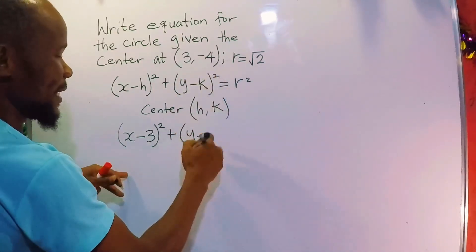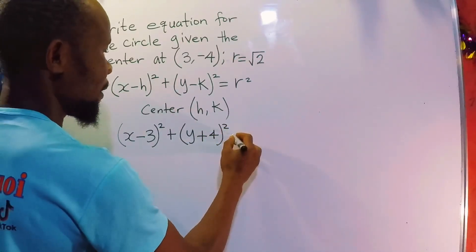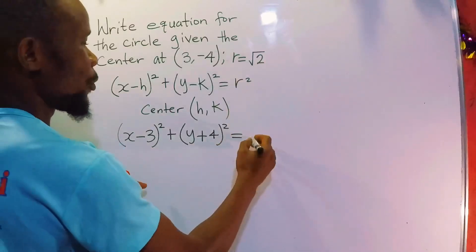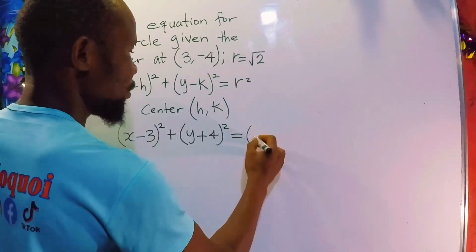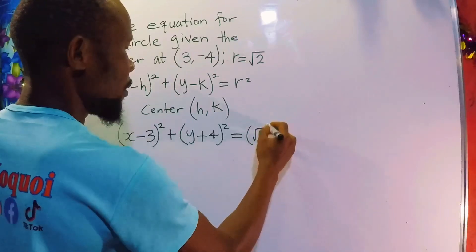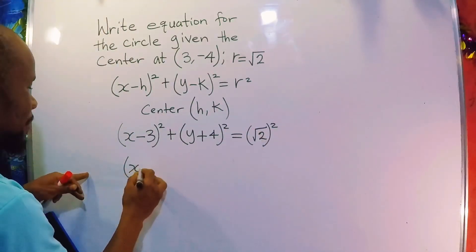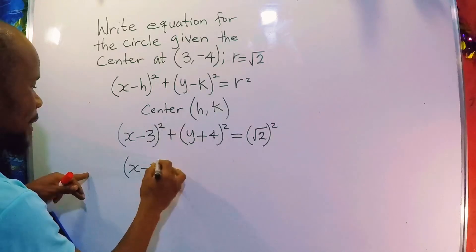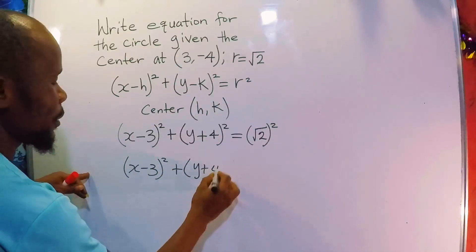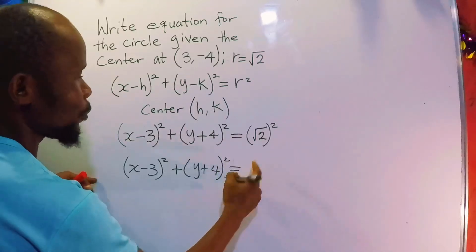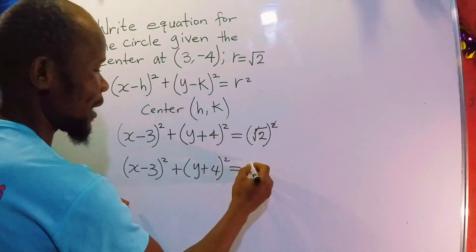This negative times this negative gives us positive 4, close parenthesis squared, equal to. Now we have r here, which should be squared. So we can say (square root of 2) squared. So we will have (x minus 3) squared plus (y plus 4) squared equal to — the square root and the square cancel, so you will have 2 here.